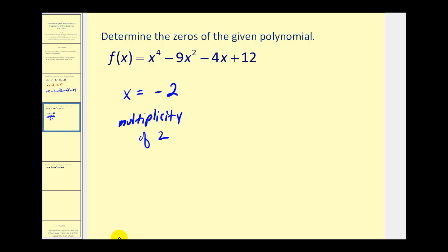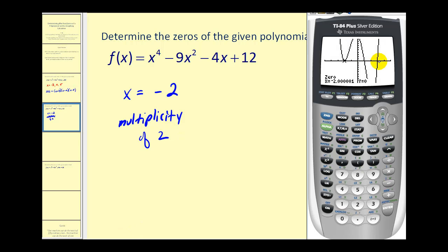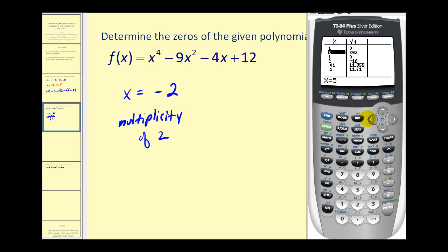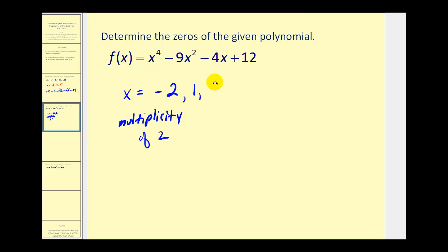Now let's find the remaining two zeros. By inspection, this zero appears to be one and this zero appears to be three. Let's verify on the table: x equals one produces a function value of zero, and so does x equals three. Let's record those as x equals one and x equals three.